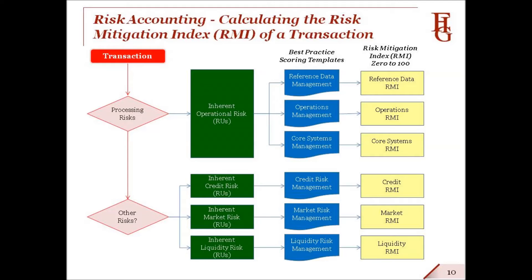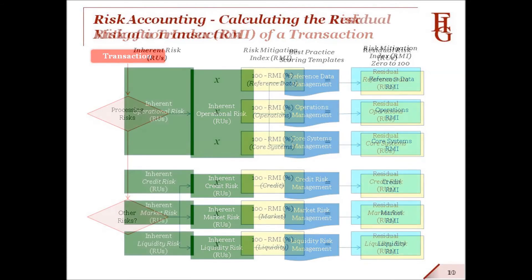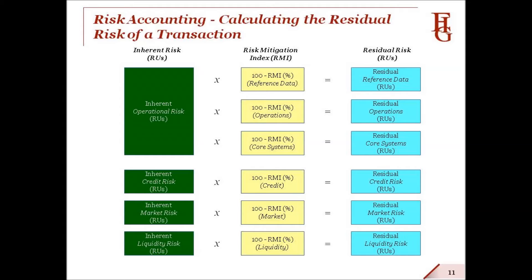We then calculate the risk mitigation index, or RMI, for each transaction. The basis for the calculation is best practice scoring templates. For each of the categories shown here — processing risks, reference data, operations and core systems, and then credit, market, and liquidity risks — experts have identified, weighted, and scaled to a range of between 0 and 100, the best practices and best practice benchmarks that affect risk mitigation. An RMI of 100 means that risk mitigation is perfect and the inherent risk of a transaction is mitigated to 0. But don't worry — an RMI of 100 never occurs. There is always some residual risk. We then calculate the residual risk in RUs, which is the inherent risk reduced by the RMI as a percentage.